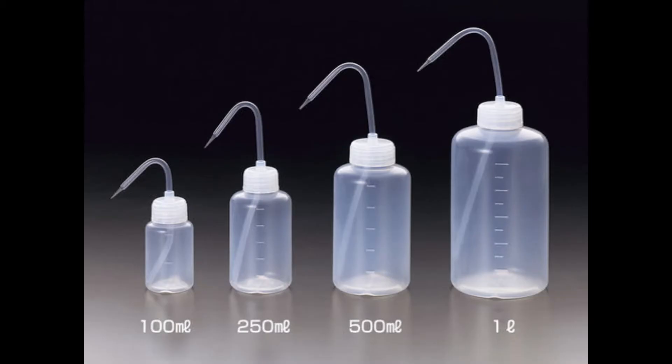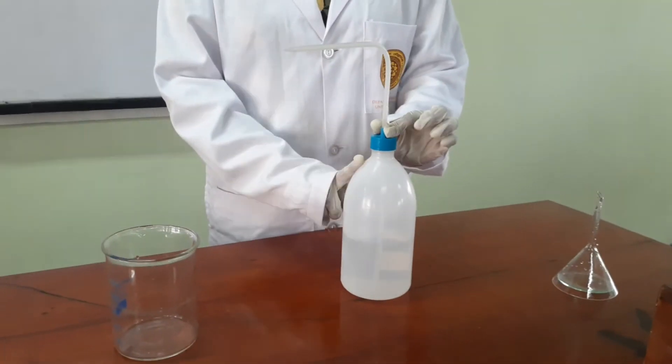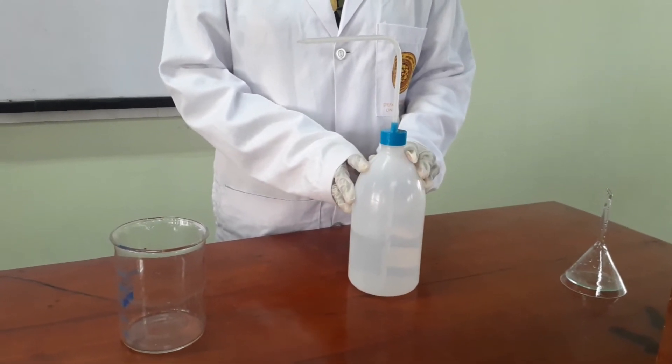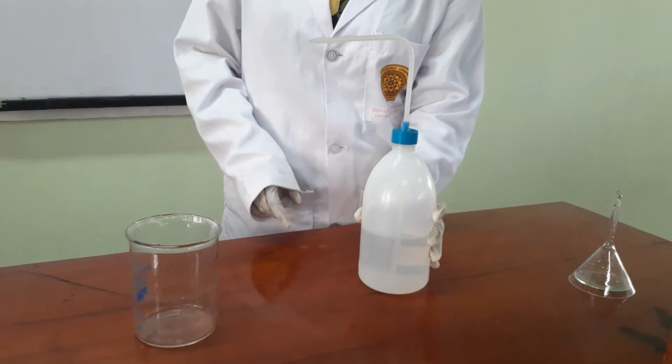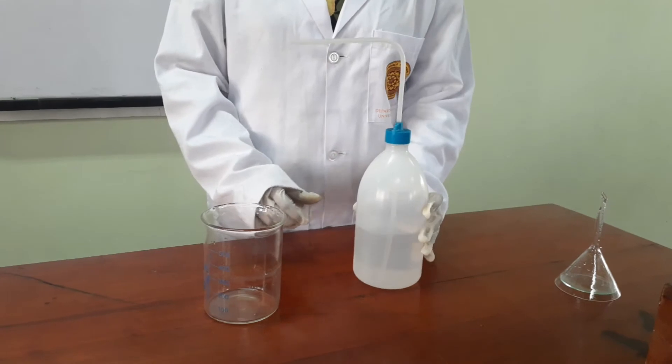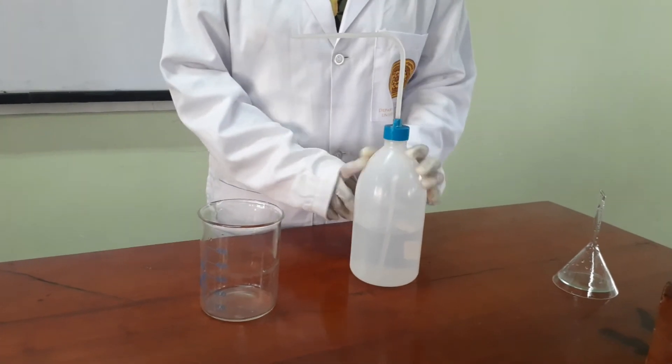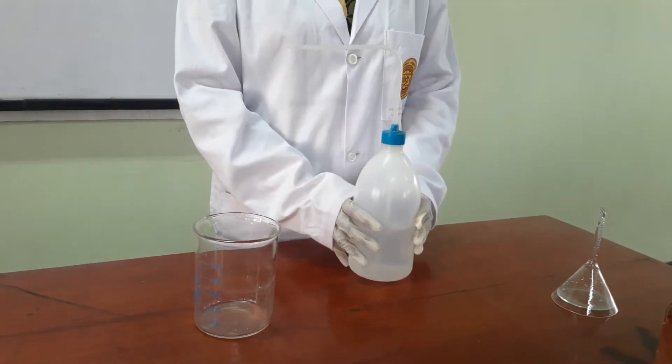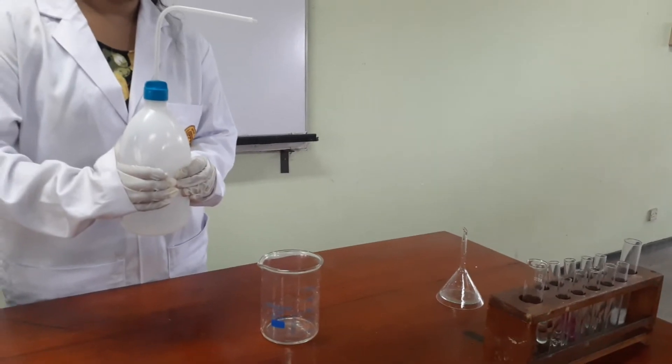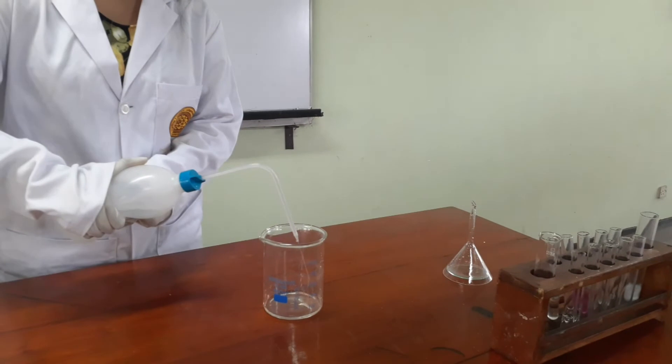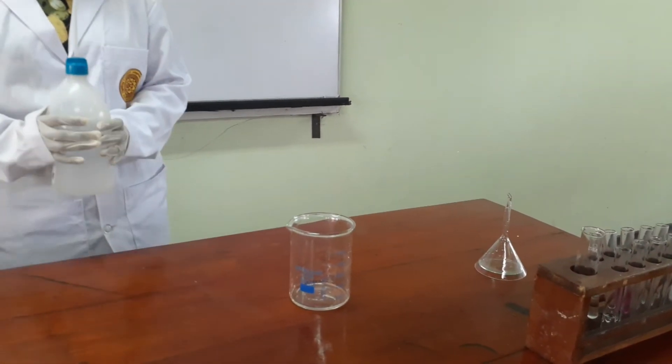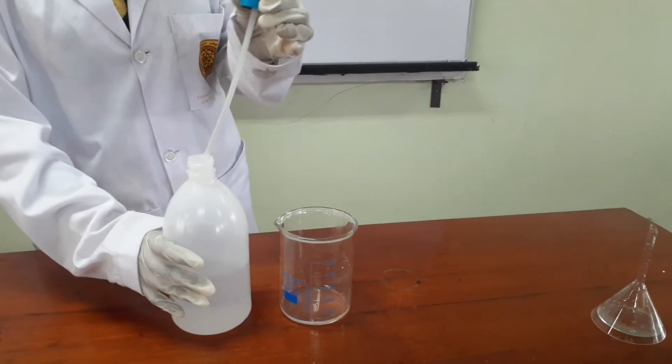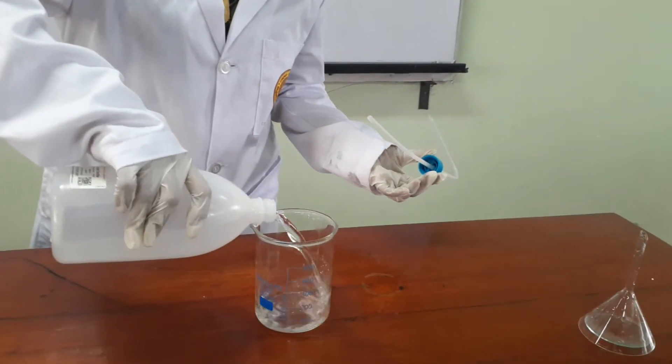Wash bottles. This is the wash bottle that we use to store deionized water or distilled water in a chemistry laboratory. We use this to get large quantity of water, somewhat less amount of water such as 10 ml, and also we use it to get very small amount of water. First, we need to squeeze the bottle like this in order to get a somewhat less amount of water quantity. And then we have to remove the tube of the wash bottle in order to get a somewhat larger amount of water quantity like this.